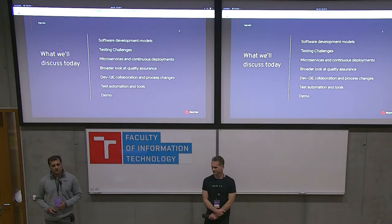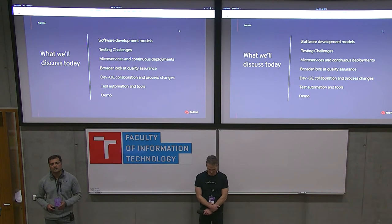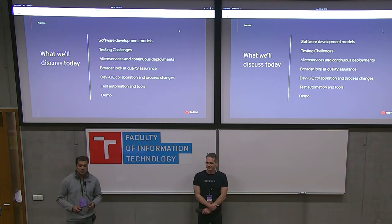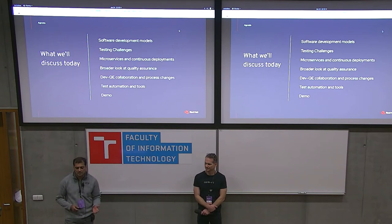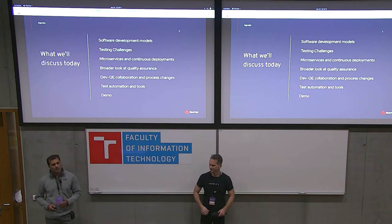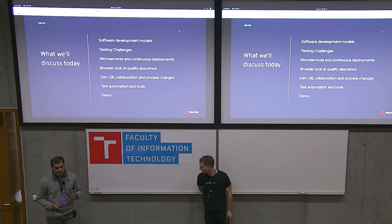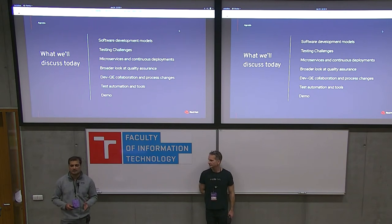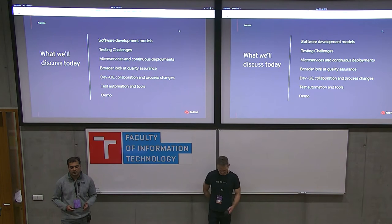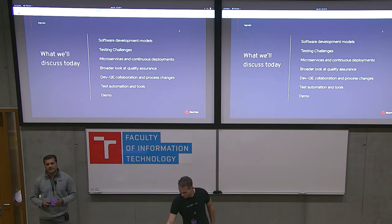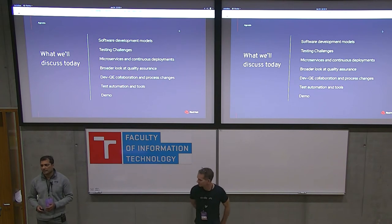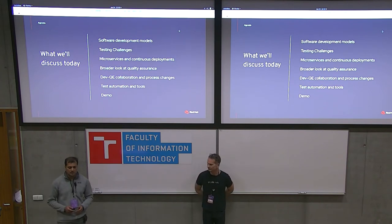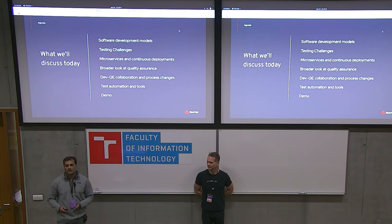In terms of the agenda, we'll start off by looking at some of the software development models and the testing challenges inherent to them, and how microservices and continuous deployments play a role — and exacerbate those situations in some cases. We'll take a broader look at our quality assurance goals, then examine the DevQE collaboration and process changes we had to make. Finally, we'll look at the test automation and tooling we developed, and we'll wrap up with a demo.